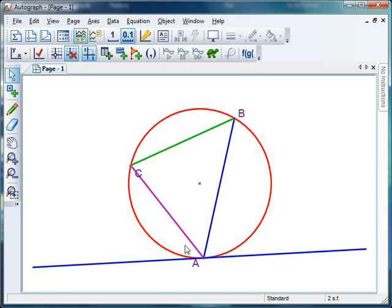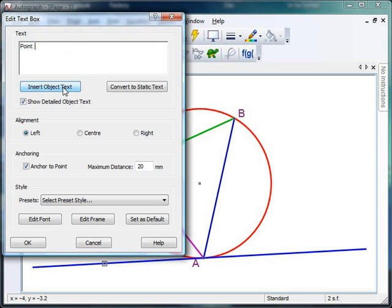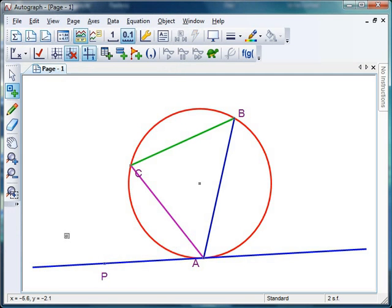Now, I want to measure this angle here. Now the problem is, it's hard to define it, because it's C to A to something on this tangent. So what I've got to actually do is pop a little point on this tangent somewhere. Just pop it there. Whilst that's selected, I might as well label that. So if I remove the object text, and I think I'll call that P, there's point P.